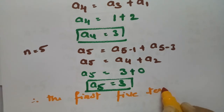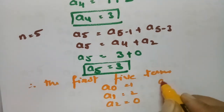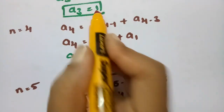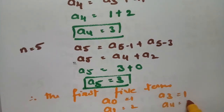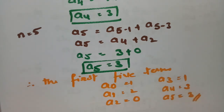Therefore the first five terms are: a_0 = 1, a_1 = 2, a_2 = 0, a_3 = 1, a_4 = 3, and a_5 = 3. This is how we find the values and terms of a sequence. This chapter is simple if you follow along — please subscribe, like, and share with your friends.